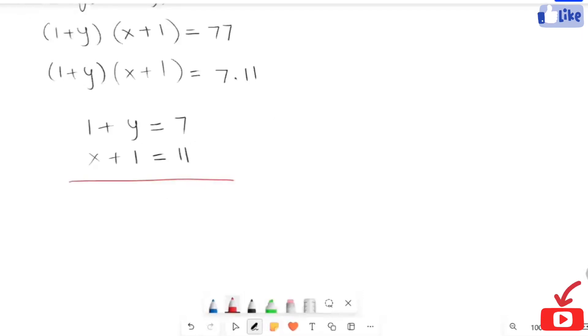Now I'm going to add up both these equations to find out the value of x plus y. 1 plus x plus y plus 1 equals 7 plus 11.